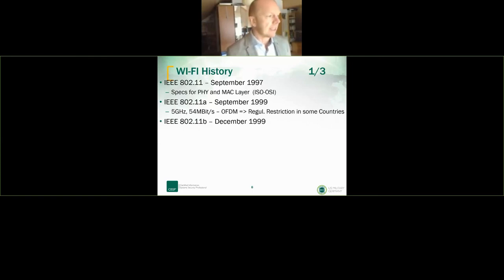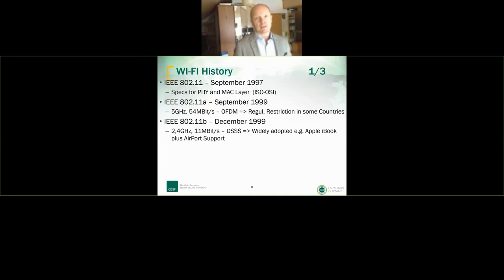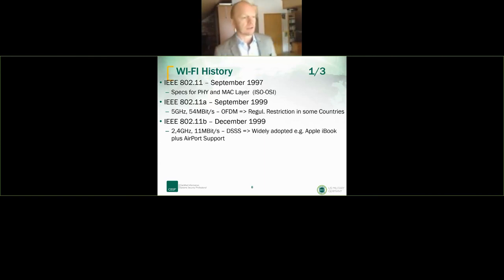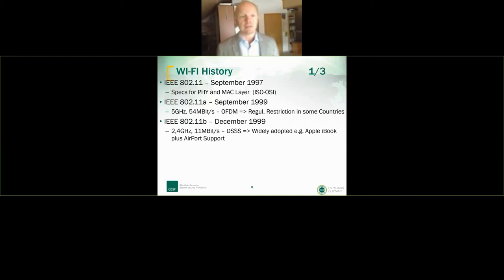What was widely adopted was 802.11b, also in 1999, using the 2.4 GHz open frequency space with 11 Mbps using DSSS — Direct Sequence Spread Spectrum technology. It was widely adopted; many vendors put it in their machines, wireless NIC cards became available, and Apple gave it a big boost by using 802.11b in their iBook and introducing AirPort for their wireless network.